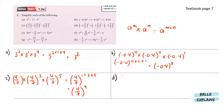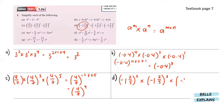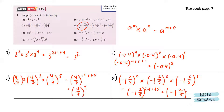And for d, we have negative 1 and 2 over 5 in a bracket to the power of 2 times negative 0.5 to the power of 3 times negative 1 and 2 over 5 to the power of 5. So that will give us negative 1 and 2 over 5 to the power of 2 plus 3 plus 5, giving us negative 1 and 2 over 5 to the power of 10.